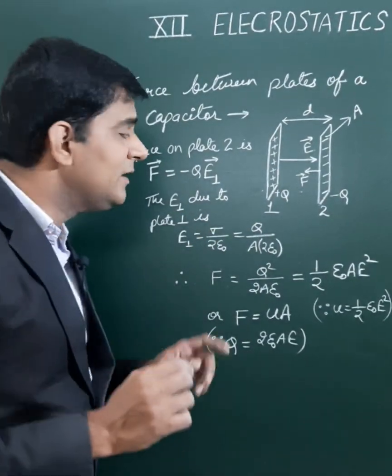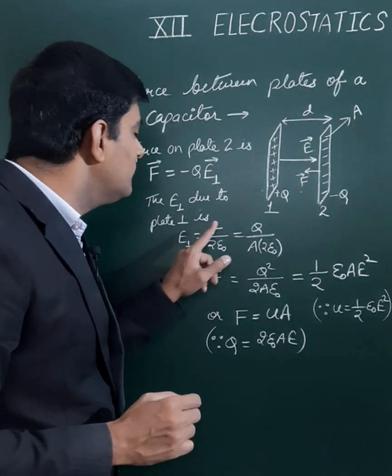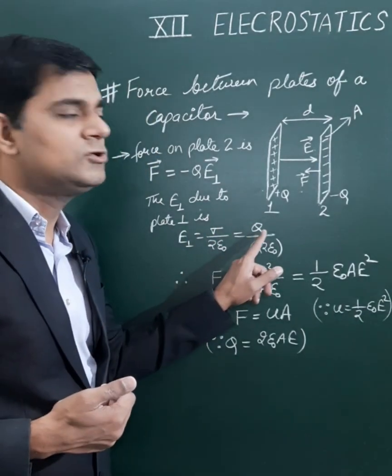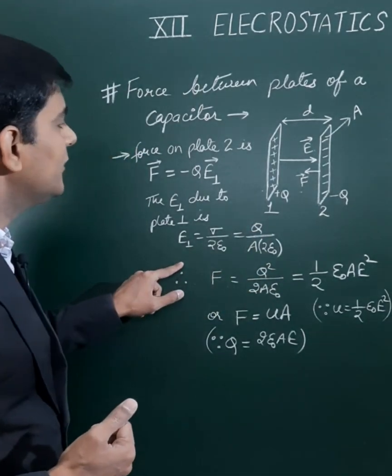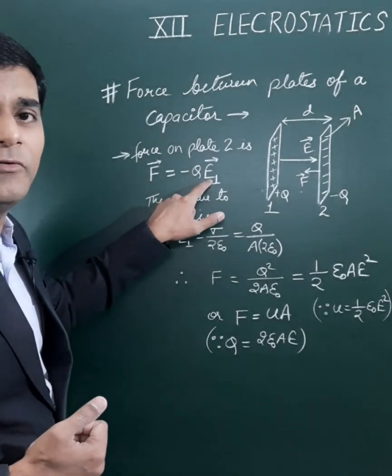Now this electric field E1 equals sigma upon 2 epsilon naught, where sigma is charge upon area. This is the magnitude of the electric field, and we substitute this in the above equation.